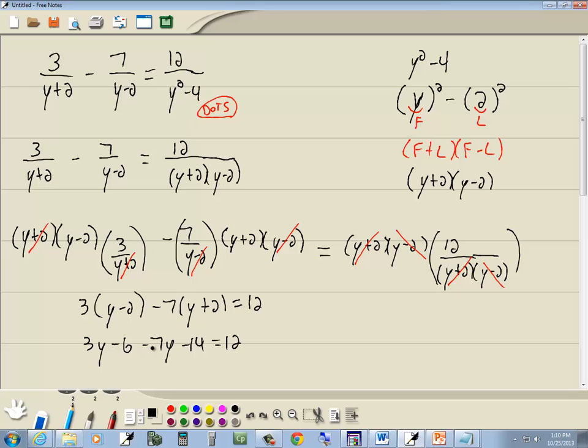Combine together like terms. 3y minus 7y is negative 4y. Combine together the numbers at any step. Negative 6, negative 14 is negative 20.